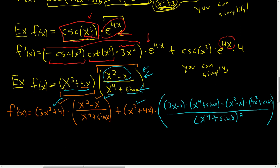Let's check that. The derivative of the first is 2x minus 1 — yes. Times the second — yes. Minus the first — yes. Times the derivative: that should be 4x cubed, which is the derivative of x to the 4th, and the derivative of sine is cosine, so 4x cubed plus cosine — yes. And on the bottom you just have that being squared.